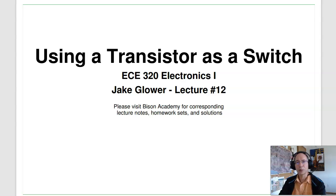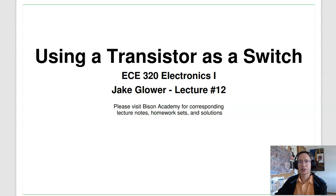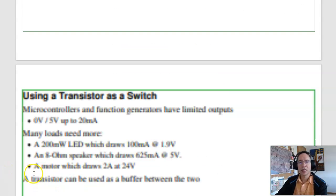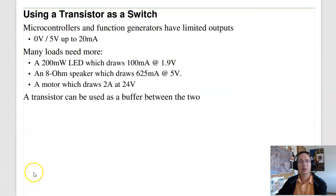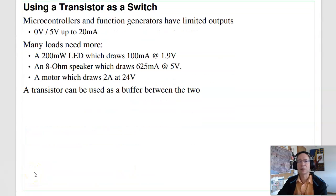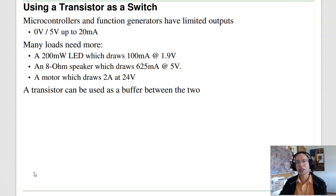Welcome to lecture number 12 for ECE 320, digital electronics: using a transistor as a switch. Transistors make a nice buffer between many devices and something that needs more power. Typically the stuff you're dealing with, like microcontrollers, cell phones, and function generators, are wimps. They can only output typically zero volts and five volts up to 20 milliamps. To drive something bigger you need more power — that's what a transistor does.